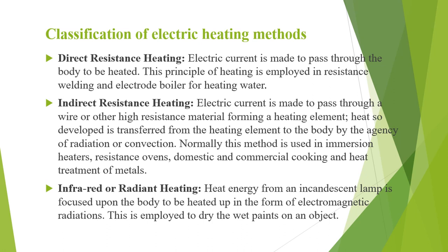Indirect resistance heating is usually used in immersion heaters, resistance ovens, domestic and commercial cooking and heat treatment of metals. Infrared or radiant heating: the heat energy from an incandescent lamp is focused upon the body which is to be heated in the form of electromagnetic radiations. Application is to dry the wet paints on an object.